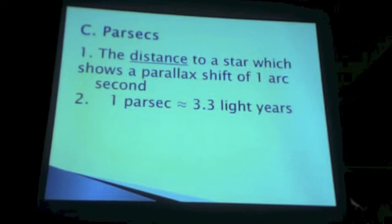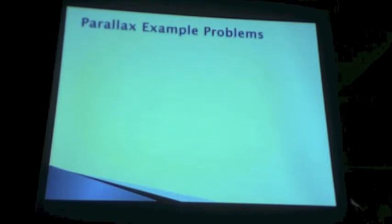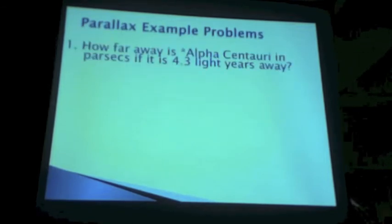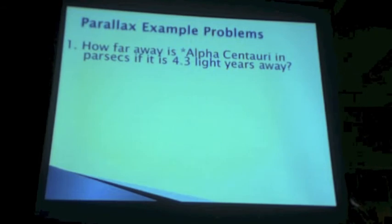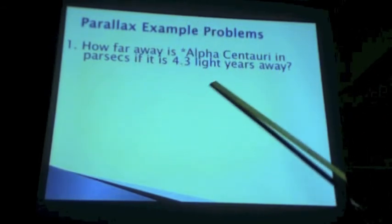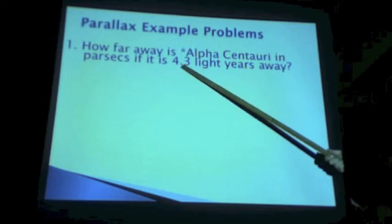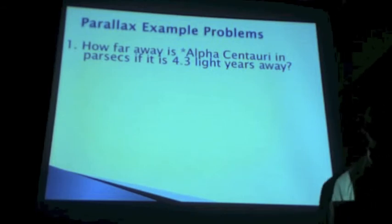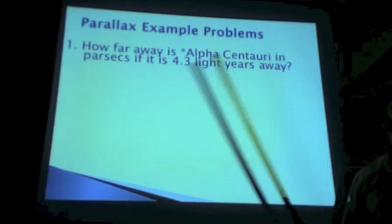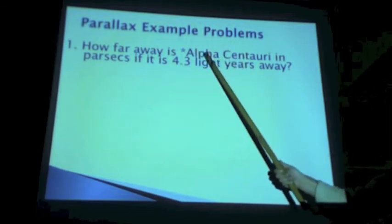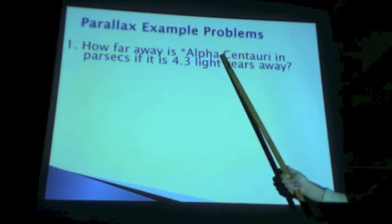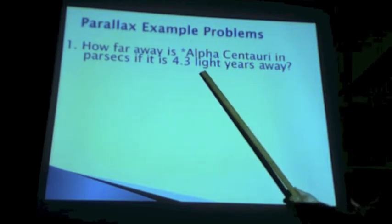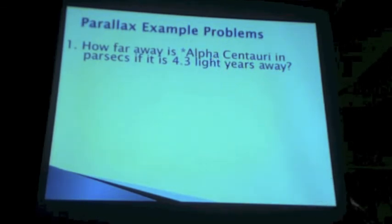So that brings us to our first little math problem, converting. We'll be doing some of that, some converting. Here's your first one. How far away is Alpha Centauri in parsecs if it is 4.3 light years away? That's its actual distance. Why did I pick Alpha Centauri? That's right. That's our next-door neighbor star system. That system is the closest star system to us. It's our next-door neighbor. That's the brightest star in that system, Alpha Centauri.